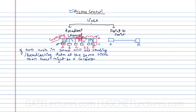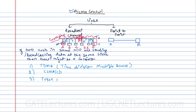For access control we have different mechanisms: number one is TDMA — Time Division Multiple Access; second is TDMA with polling; then we have CSMA/CD; and then we have token ring to ensure access control. In GATE syllabus they remove the token ring part, so we have TDMA and CSMA/CD. In UGC NET we have TDMA, CSMA/CD, and even token ring. I'm going to discuss all of these, including token bus.